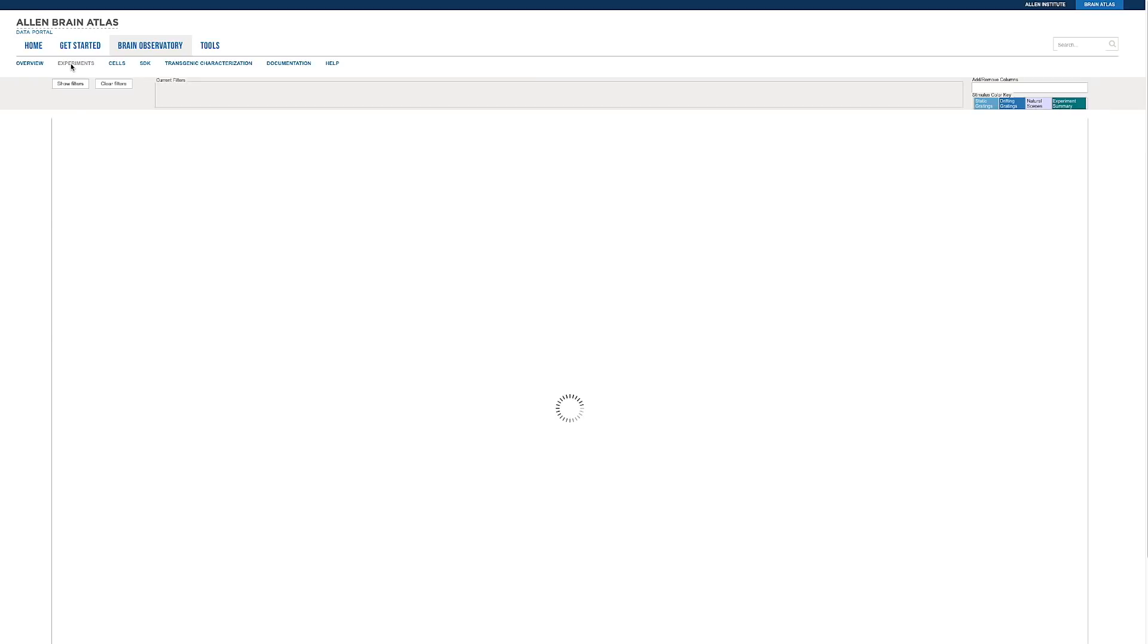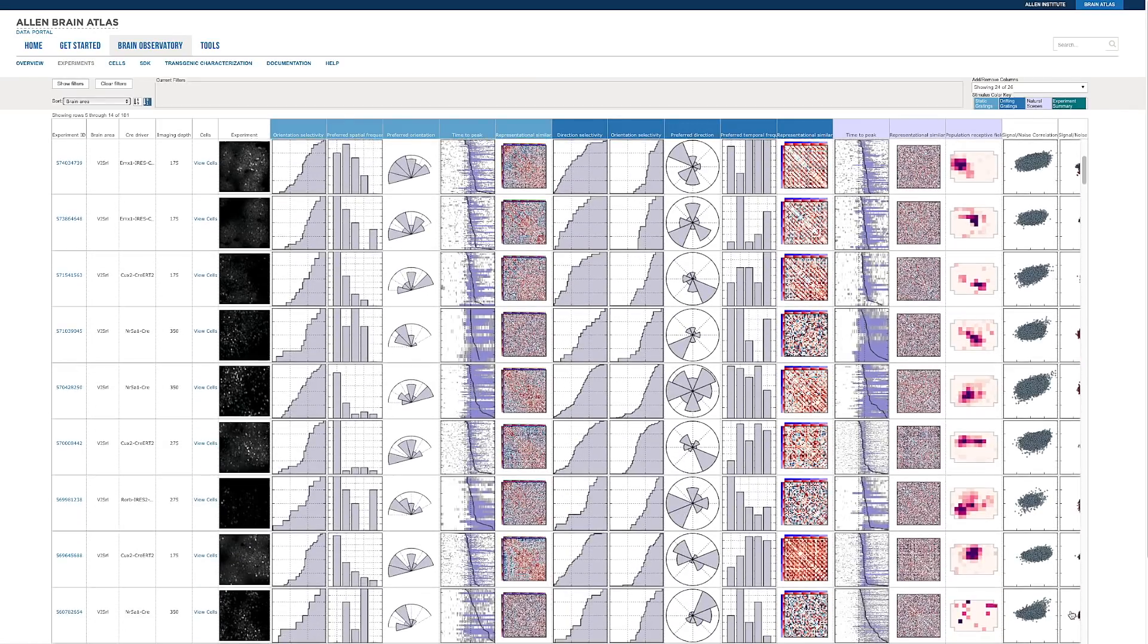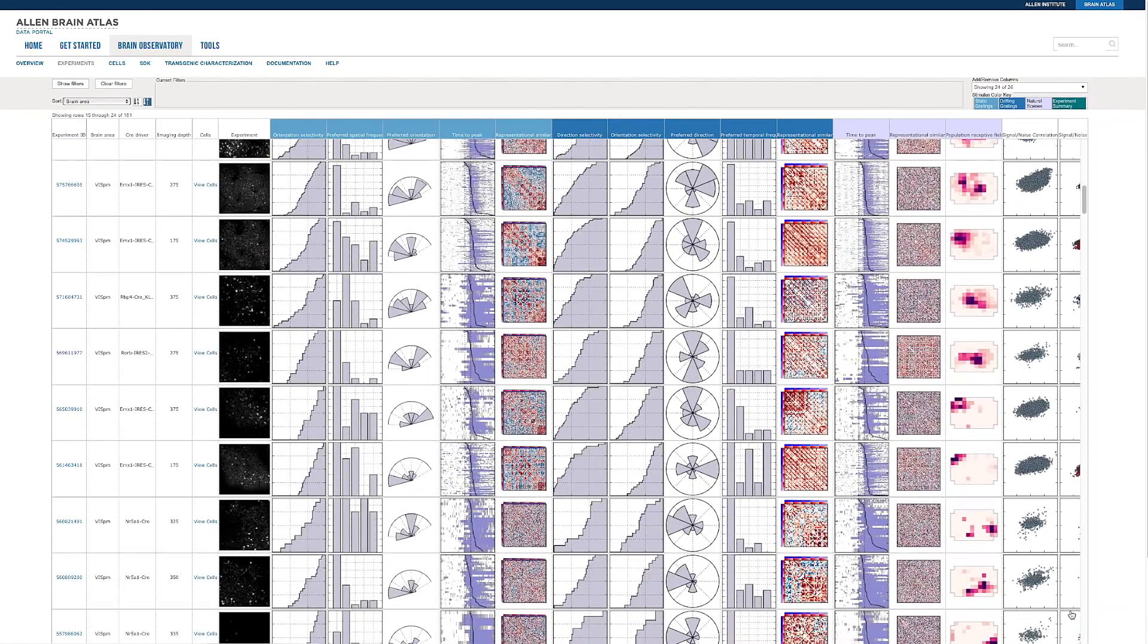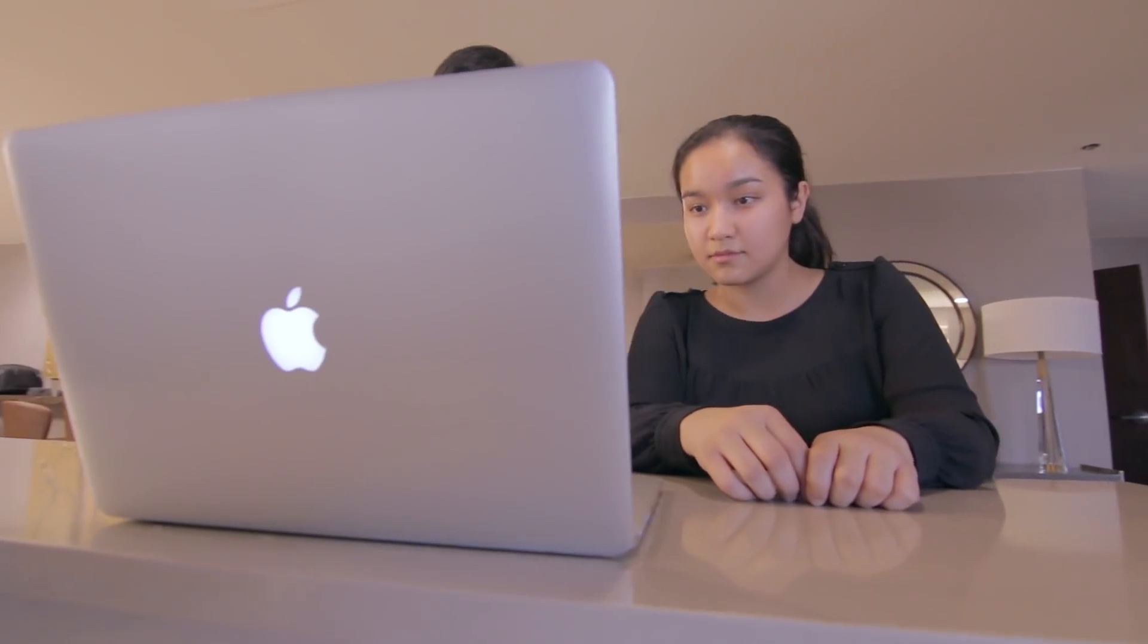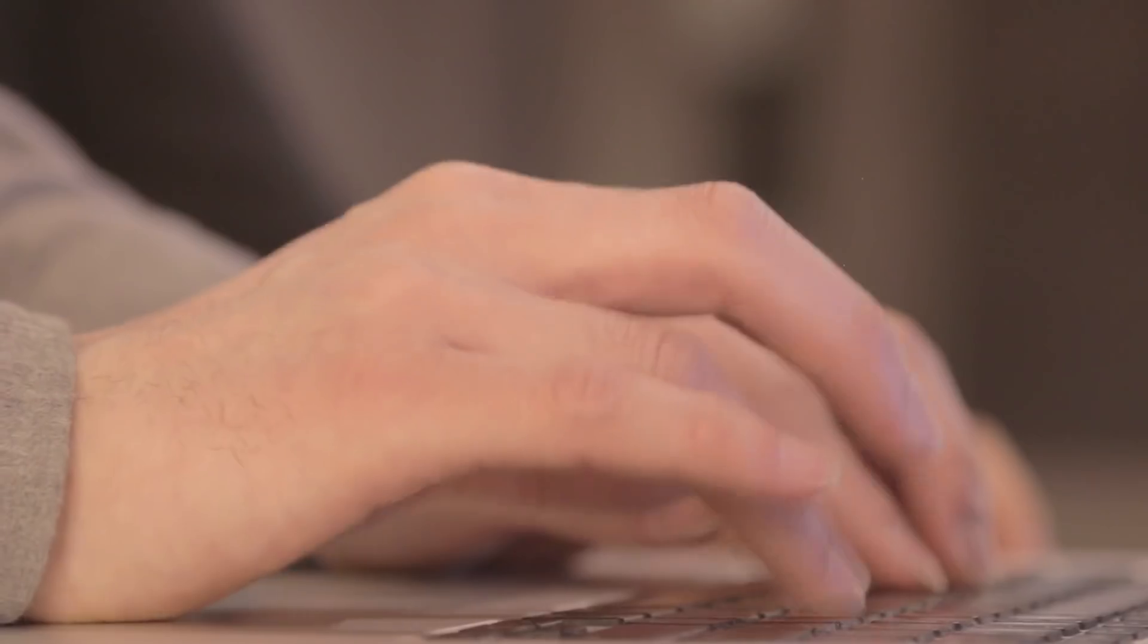The Allen Brain Observatory data really provides a platform so that people can compare different methods and approaches on the same data set, and this data set is very rich. I was really amazed by the size of the data set. The main advantage is really that it's big. The Allen Institute data offers you an unbelievable number of avenues to explore.